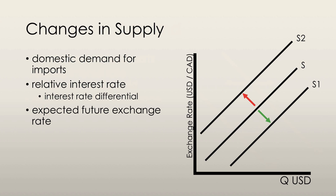Changes in supply are caused by pretty much the same factors. Canadian demand for imports affects the supply — an increase in the Canadian demand for imports increases the supply of Canadian dollars in the foreign exchange market. Suppliers of goods and services want to be paid in their own currency, so if we're buying goods from abroad, we have to first purchase another currency and then pay that supplier in that currency. By buying that foreign currency, we're supplying Canadian dollars in order to do so, so the supply of our currency actually increases. A decrease in the Canadian demand for imports decreases the supply of Canadian dollars in the foreign exchange market.